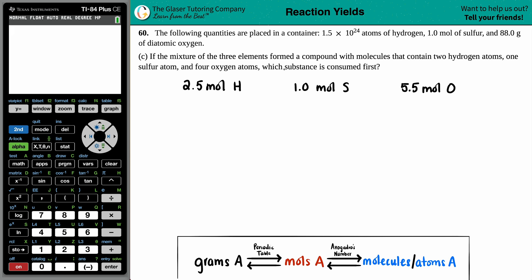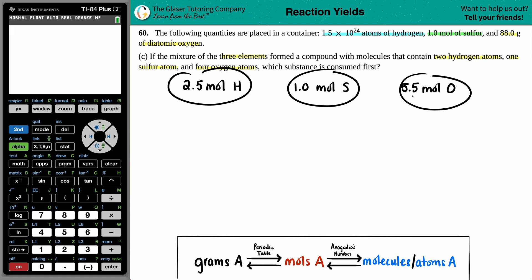Number 60. The following quantities are placed in a container: 1.5 times 10 to the 24th atoms of hydrogen, 1.0 moles of sulfur, and 88.0 grams of diatomic oxygen. For letter C, if the mixture of the three elements formed a compound with molecules that contain two hydrogen atoms, one sulfur atom, and four oxygen atoms, which substance is consumed first? I wrote down the quantities of hydrogen, sulfur, and oxygen on the screen.